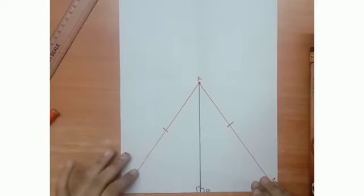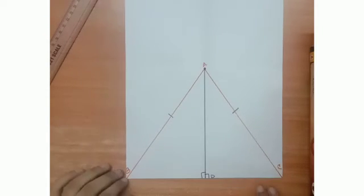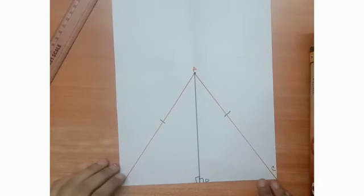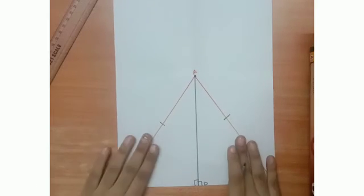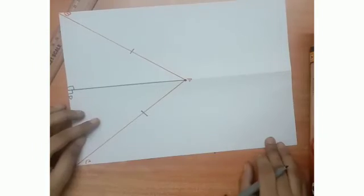Now, can you think how many kinds of isosceles triangles we can make? Yes, you are right. We can make an infinite number of isosceles triangles in this way as well as from this way.